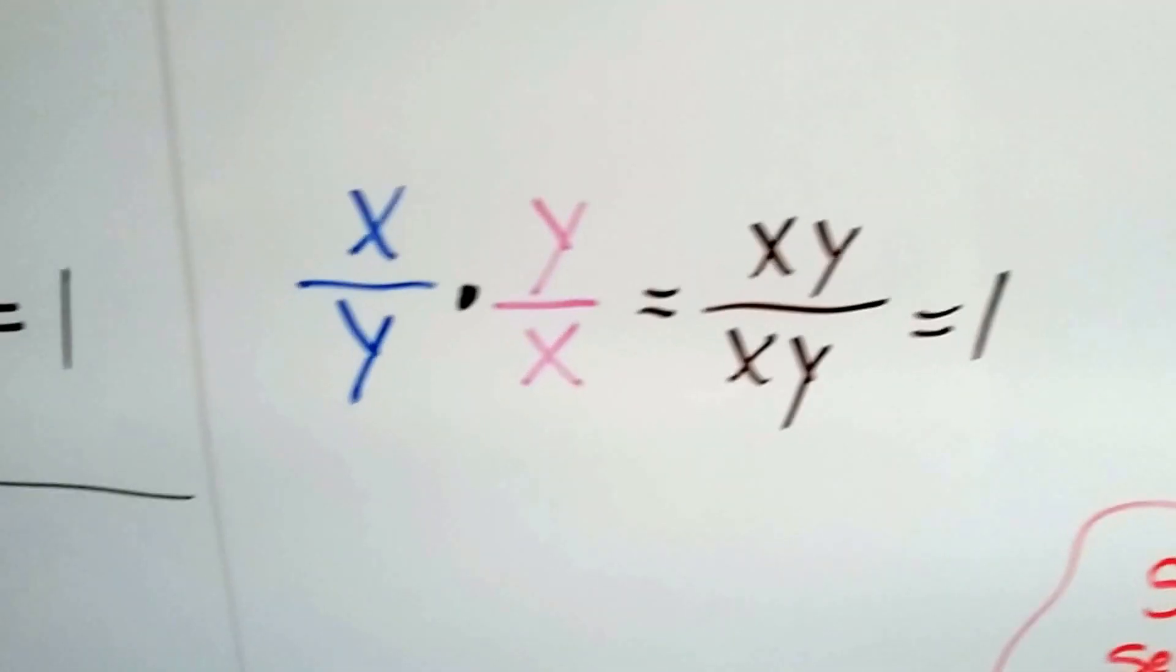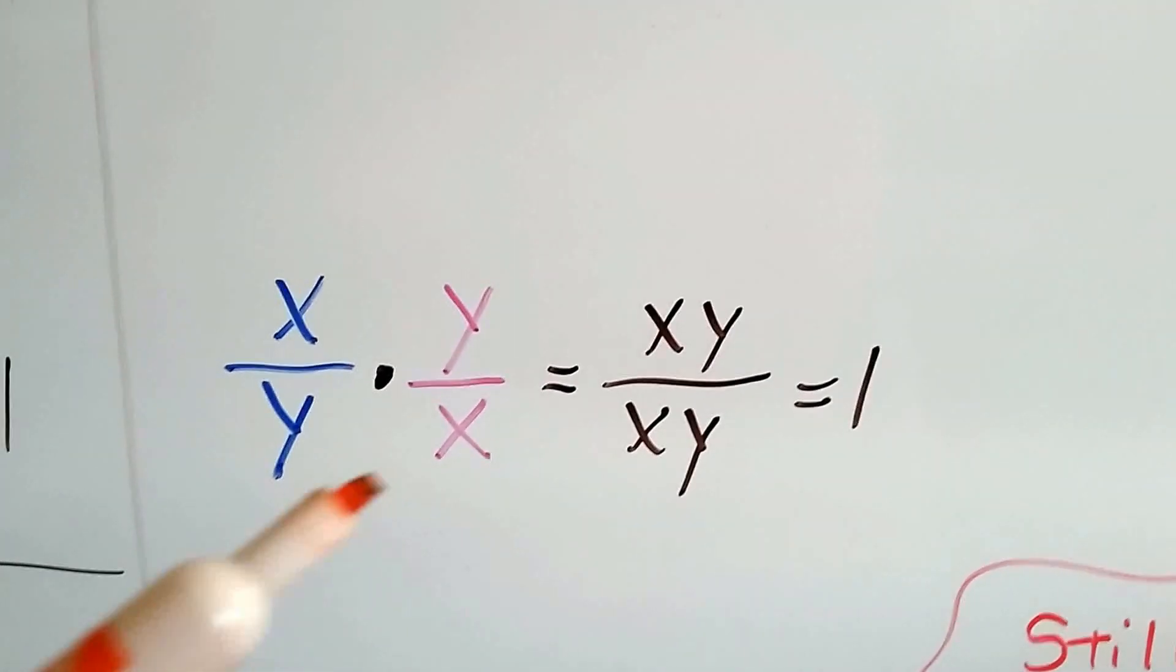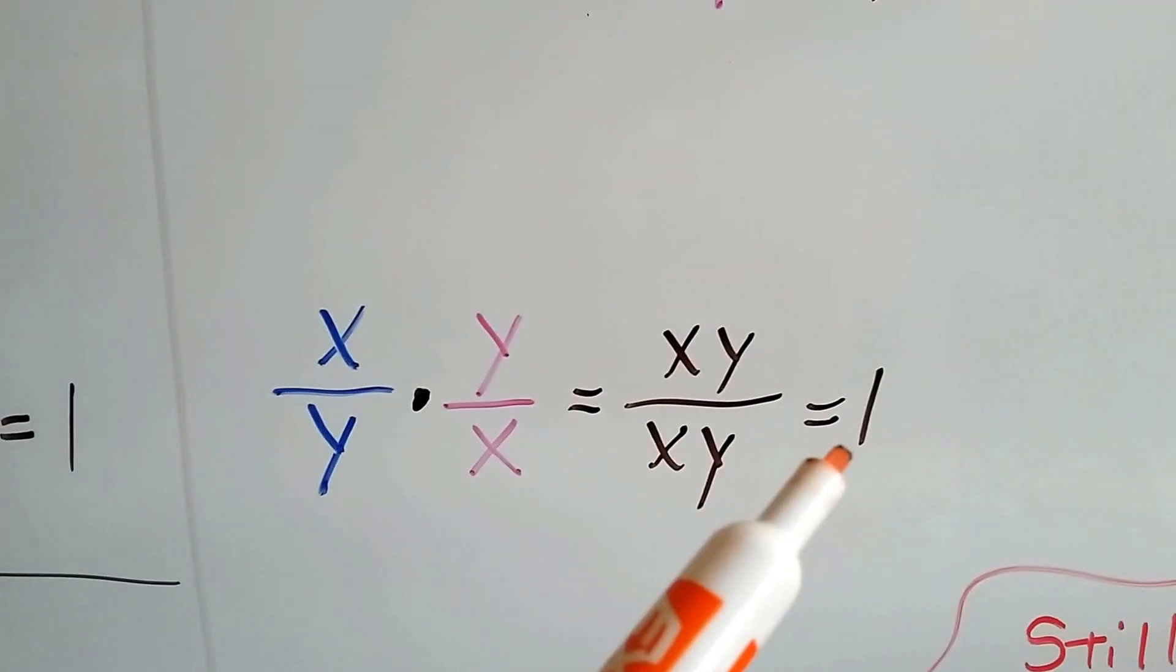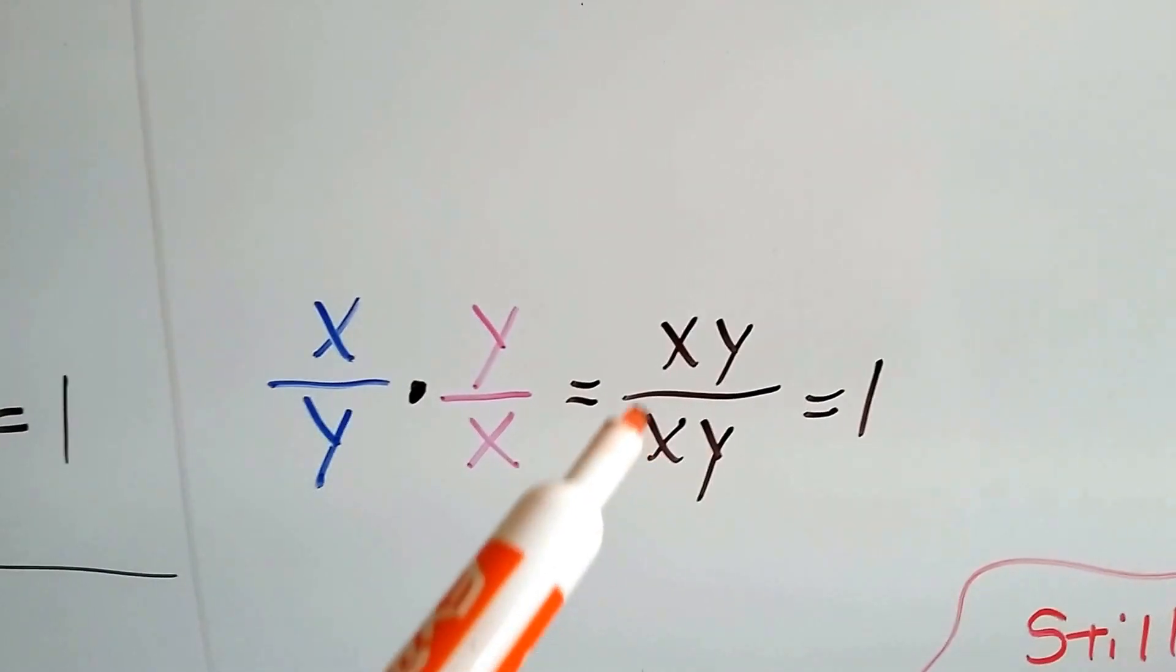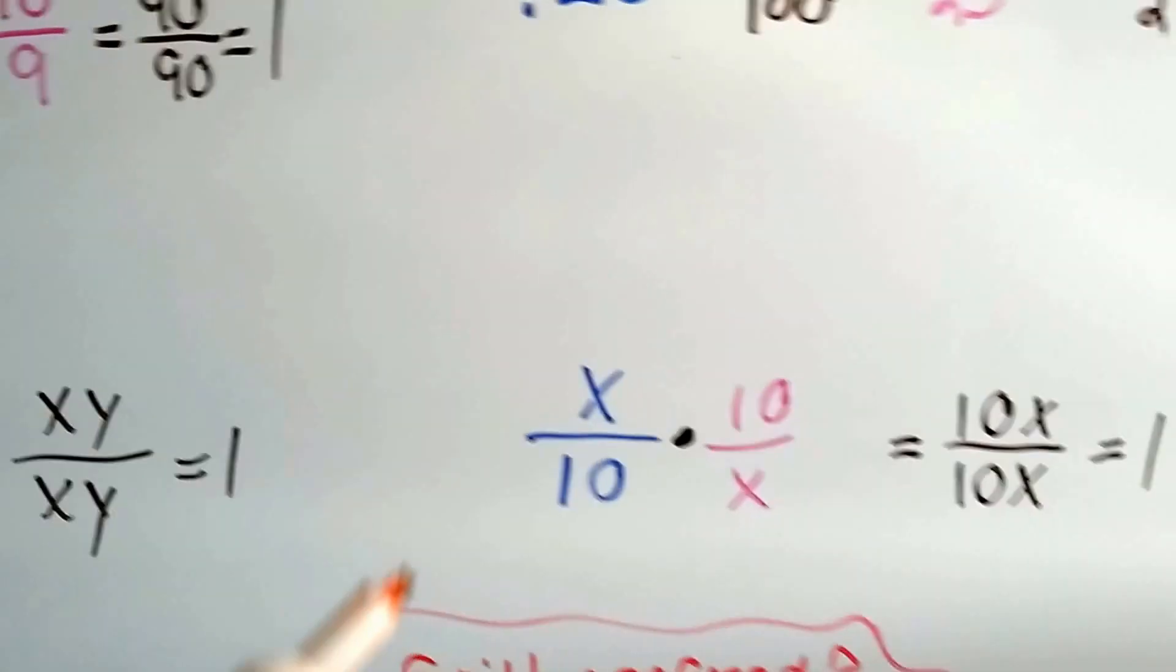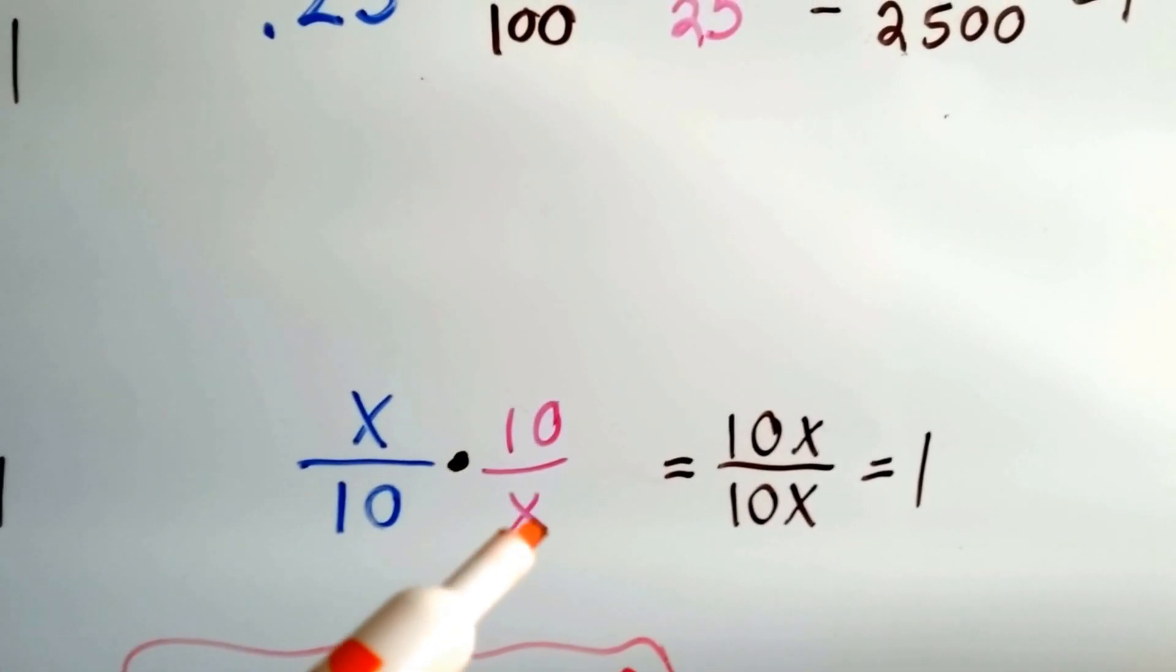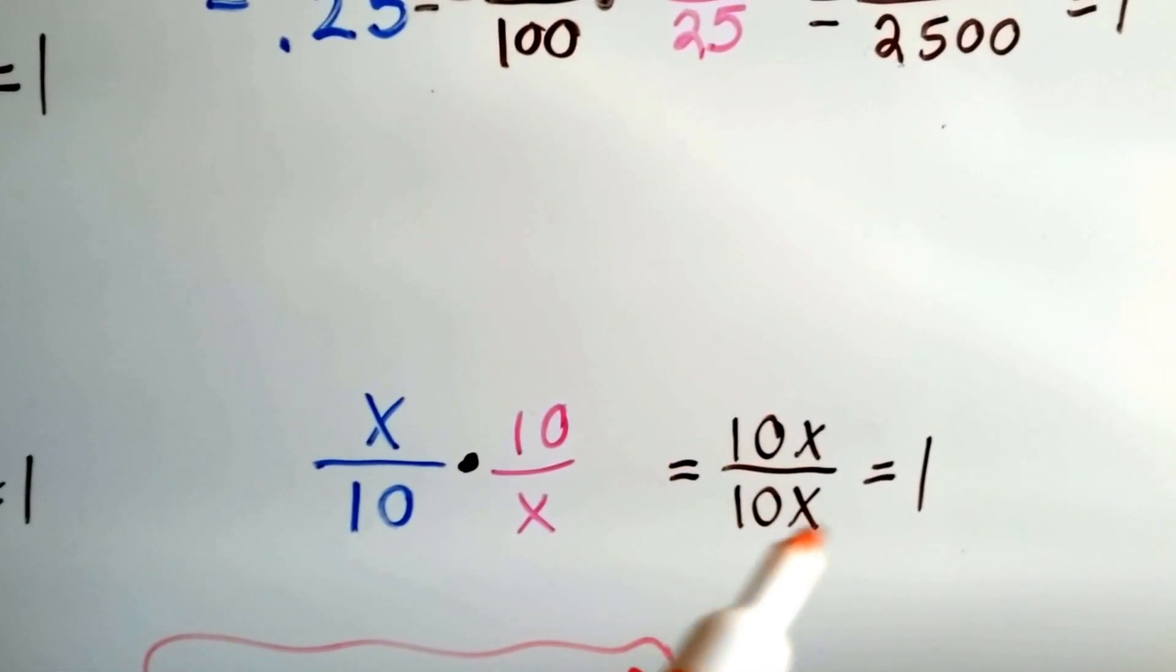And what if we have variables? Well, you flip the variables around. Now the y is on top and the x is on the bottom. We have x times y over x times y. Because we put them in alphabetical order. So this over this is going to equal 1 because it doesn't matter what these numbers are that the variables stand for. It's going to be the same numbers with the same numerator and denominator. And if we've got a variable on the top and a 10 for a denominator, we just flip it around and put the variable on the bottom. It's going to be 10x over 10x. It's still going to equal 1.